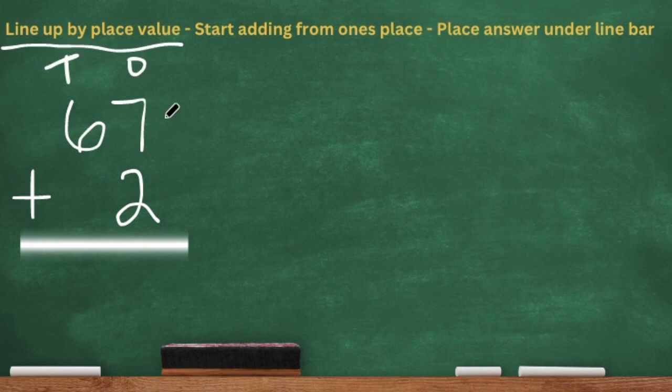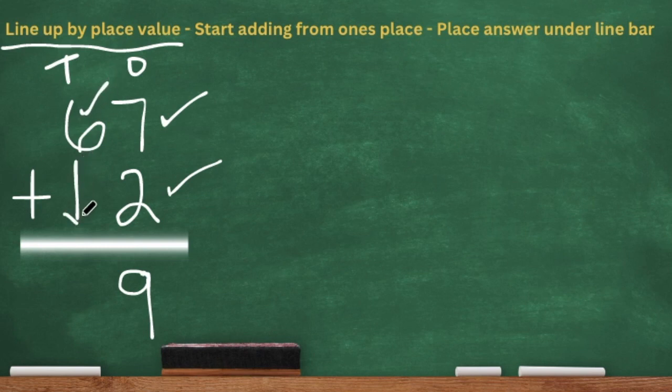Next we have start adding from the ones place. I'm going to add the seven ones plus the two ones, which will give me nine ones. Then I'm going to go over to the tens place, which is six tens. I can either bring that six down because there's no digit in that place value, or I can add a zero. Either way, the six comes down. So our answer is 69.